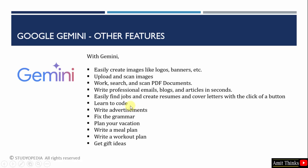Gemini is also useful for coders. It can help you get best practices in generating code and queries, and in fixing your code. It can also write advertisements for you, and fix grammar and spelling from any sentence. If you are planning for a vacation, you can use Google Gemini to get recommendations regarding hotels, restaurants, and locations. You can also generate a meal plan or a workout plan based on customized recommendations, like a meal high in protein or a workout plan for someone who just had surgery.